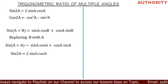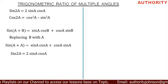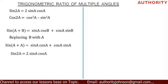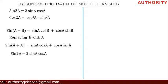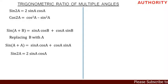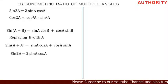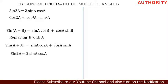Now, A + A is 2A, so we have sine 2A on the left side. On the right side, sine A cos A plus cos A sine A — these are the same two terms, so we bring them together to get 2 sine A cos A. Therefore, sine 2A is equal to 2 sine A cos A.